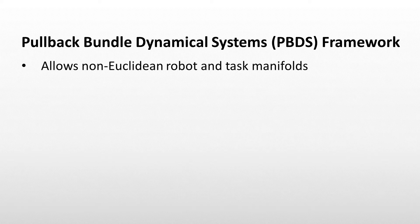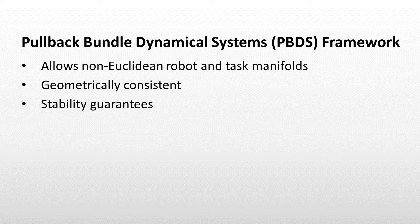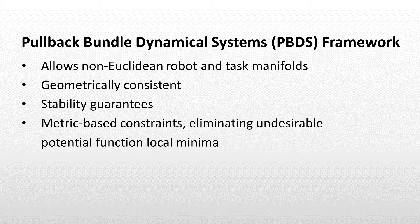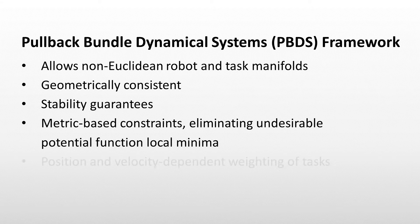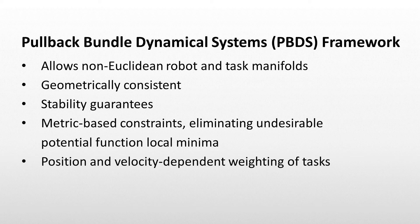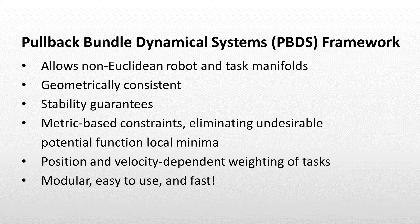This leads to a framework called pullback-bundle dynamical systems, which can generate robot motion policies over non-Euclidean robot and task manifolds, is geometrically consistent and has stability guarantees, and can leverage Riemannian metrics to eliminate undesirable potential function local minima. It also allows position and velocity-dependent weighting of tasks without sacrificing geometric consistency, and importantly, the framework is modular and in practice easy to use and fast.